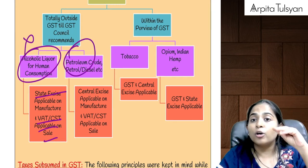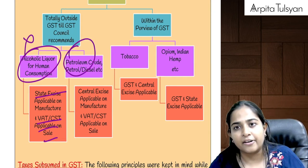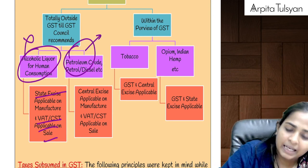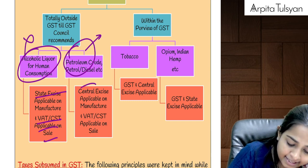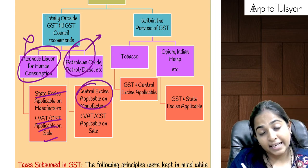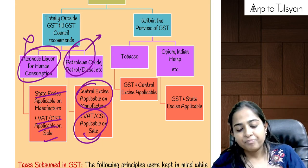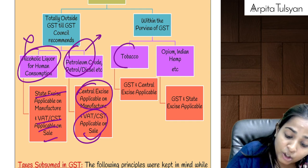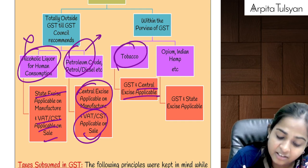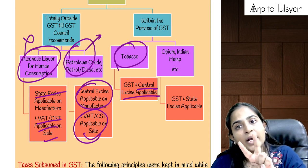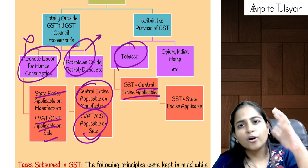Five petroleum products — petroleum crude, petrol, diesel, natural gas, and ATF — GST is not yet applicable. It will be applicable from a later date. On these, central excise duty is applicable at the time of manufacture, and VAT or CST is applicable on sale. Tobacco — GST is applicable, but on its manufacturing, central excise duty is also applicable. Two types of taxes applicable on tobacco, as it is a demerit product — levy more and more taxes.